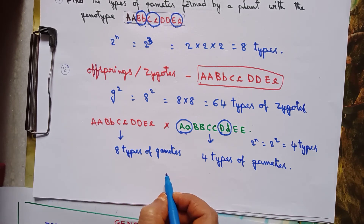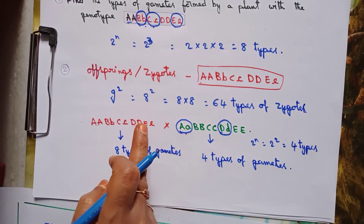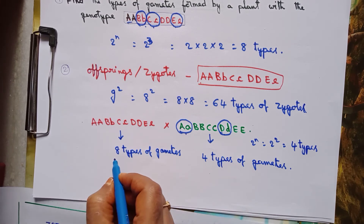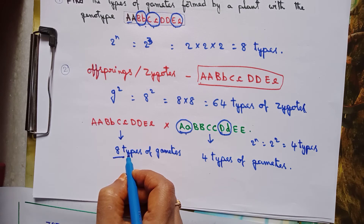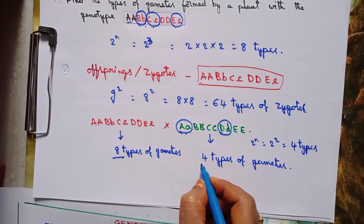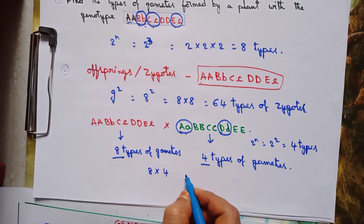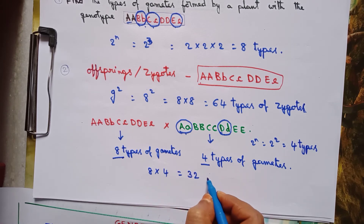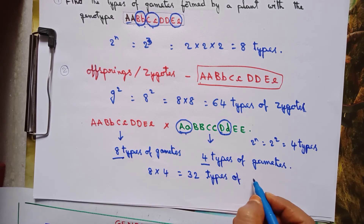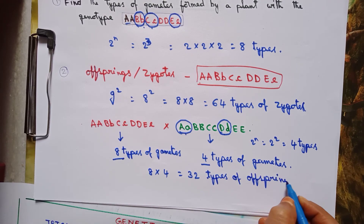To find the types of offsprings or zygotes from these two cross-pollinated plants, we multiply the types of gametes from one plant with the types of gametes from the other plant. So 8 types of gametes × 4 types of gametes = 32 types of offsprings or zygotes are formed.